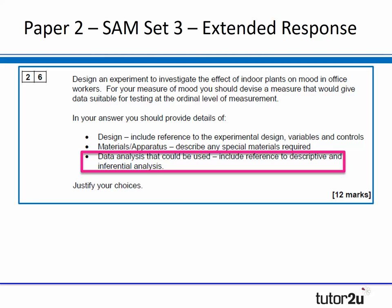The third type of question — which we shouldn't ignore — is what I call the extended response research methods questions, where students have to design their own experiment. Question 26 of sample assessment material set three asks students to design an experiment to investigate the effect of indoor plants on mood for office workers, devising a measure that gives data suitable for testing at an ordinal level of measurement. Broken down into bullet points, students need to cover design, variables, controls, materials, and most importantly for this webinar, the data analysis — including descriptive and inferential analysis.